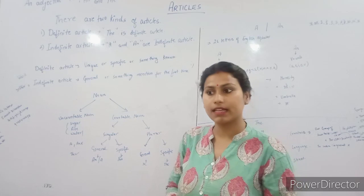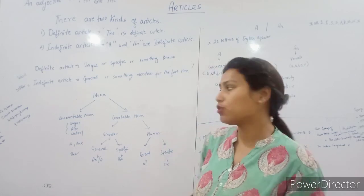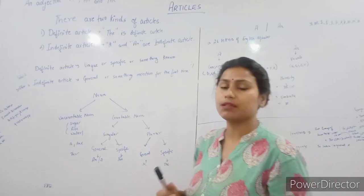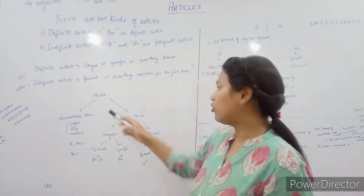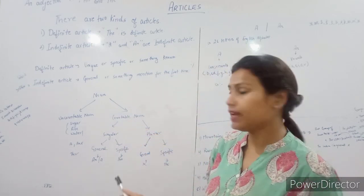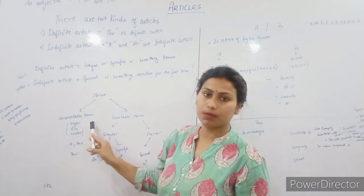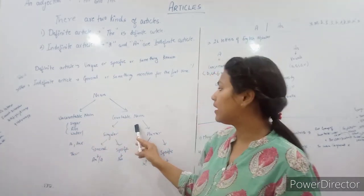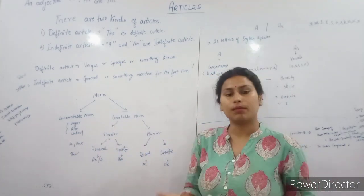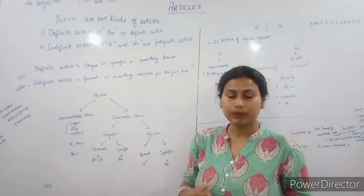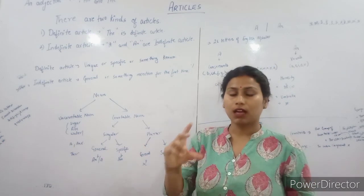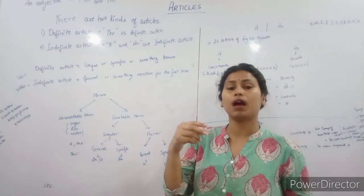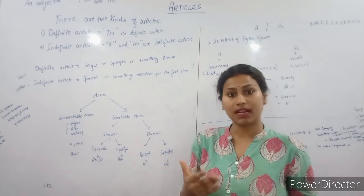Before we learn the articles, we need to know about nouns. Nouns refer to a place, name, or person. The noun is divided into two parts: uncountable noun and countable noun. Uncountable nouns cannot be counted.